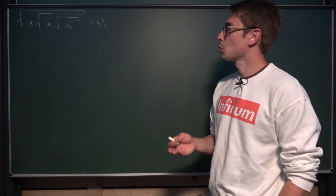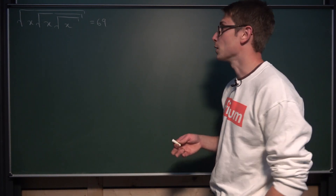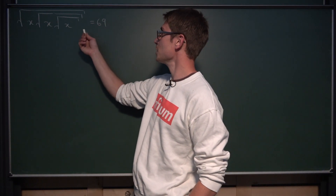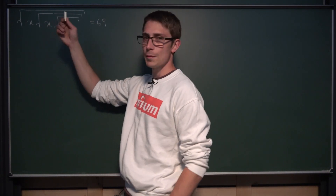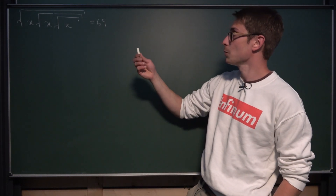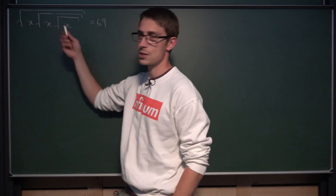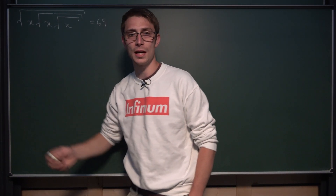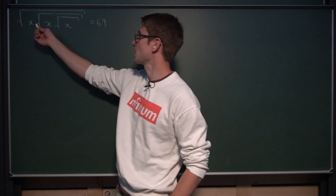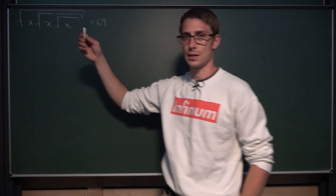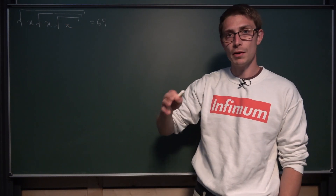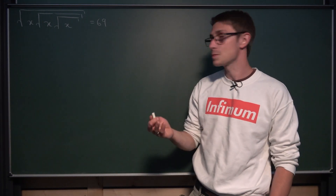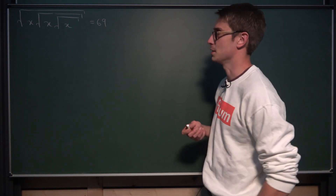So how would you approach a problem like this? If you are a student, you might think you could take the square on both sides and get rid of the square root. But then we run into the problem that we still have x and other x terms. If you square once again, you end up with x squared times x and so on — and this could be one method. But I would like to approach it from a different perspective for what we are going to do later in the video.